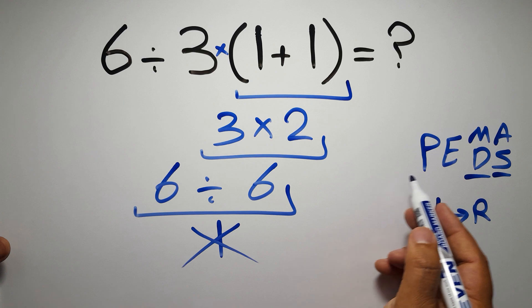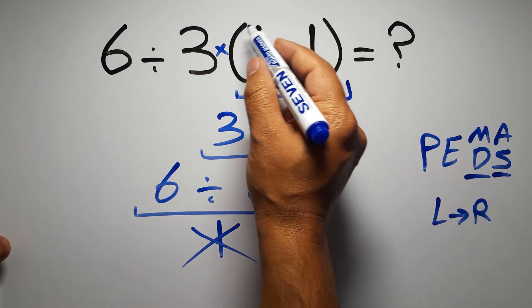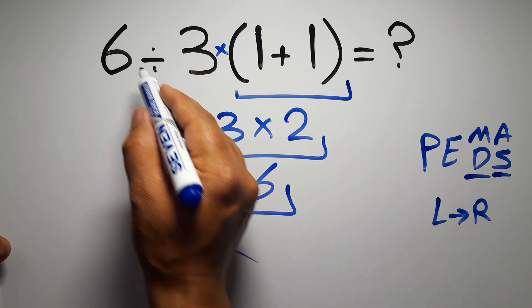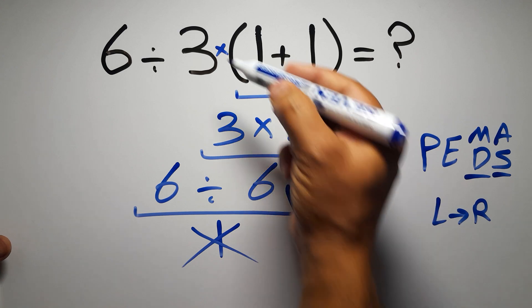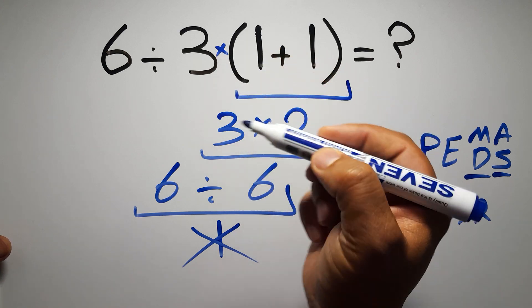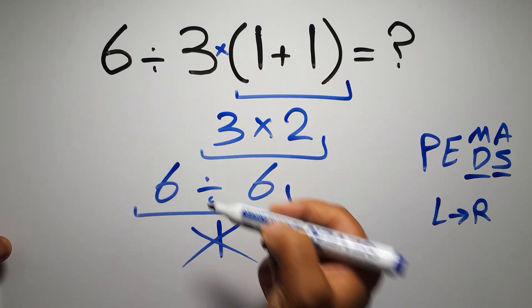So according to PEMDAS, first we have to do these parentheses, then this division, and finally this multiplication. If we do this multiplication before this division, it is wrong.